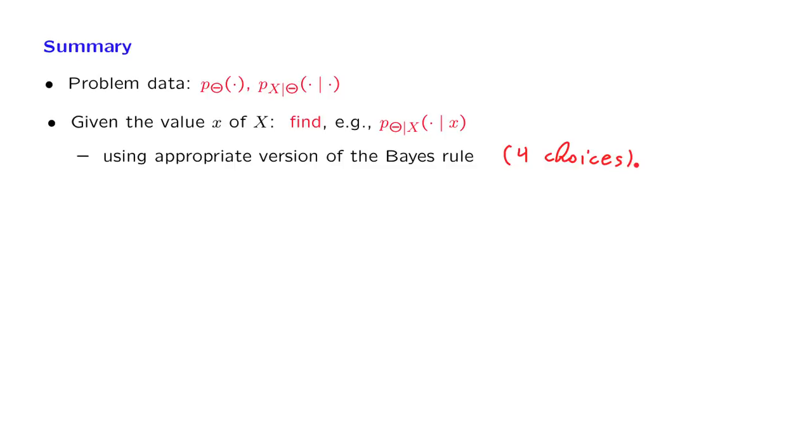This is a complete solution to a Bayesian inference problem, a posterior distribution. But if we want to come up with a single guess of what theta is, then we use a so-called estimator.